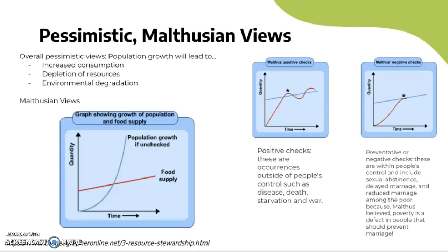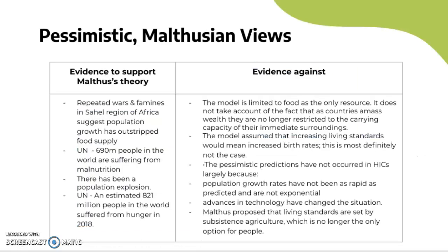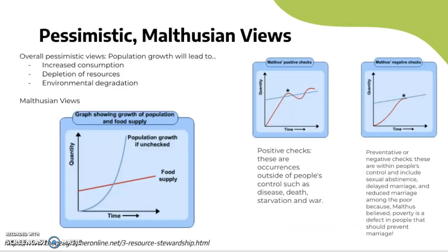Looking at the evaluation: evidence to support Malthus's theory includes repeated wars and famines in the Sahel region of Africa, suggesting population growth has outstripped food supply. The UN has stated that 690 million people in the world are suffering from malnutrition. There has been a population explosion, and the UN also estimated 821 million people suffering from hunger in 2018.